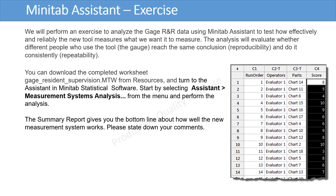The analysis will evaluate whether different people who use the tool — the gauge — reach the same conclusion (reproducibility), and do it consistently (repeatability). You can download the completed worksheet from Resources and turn to the Assistant in Minitab statistical software. Start by selecting Assistant, then Measurement Systems Analysis from the menu, and perform the analysis.